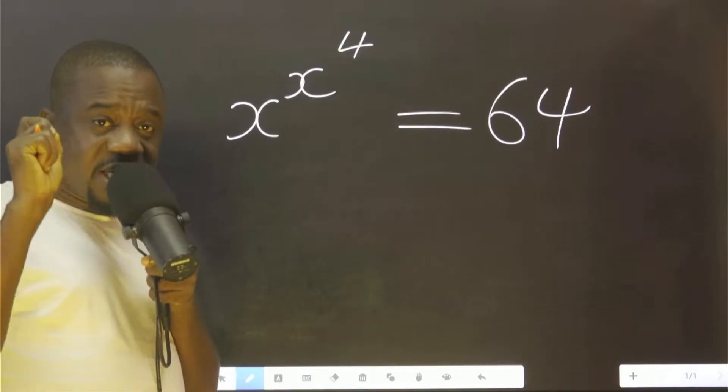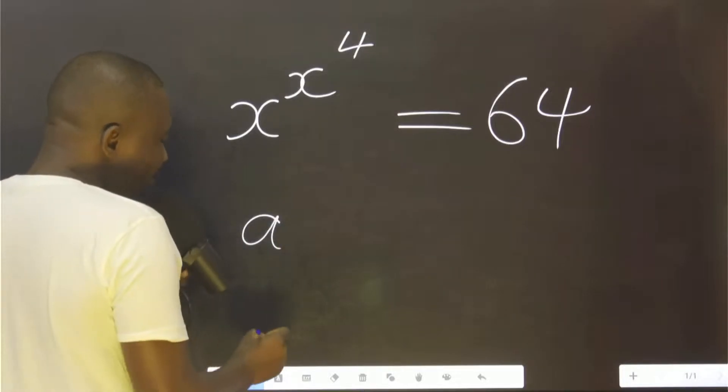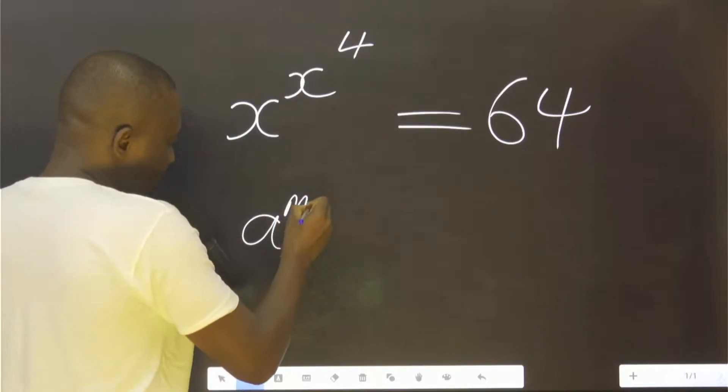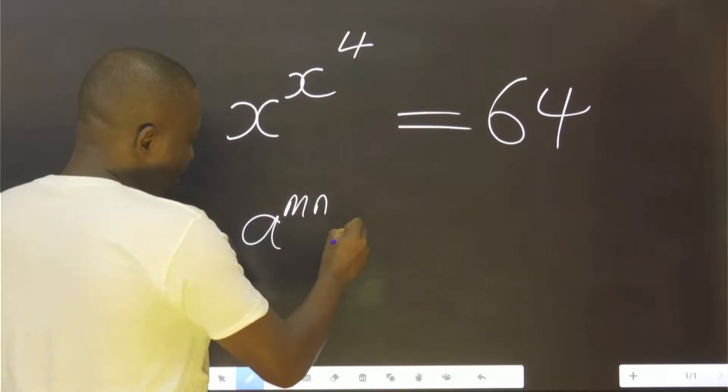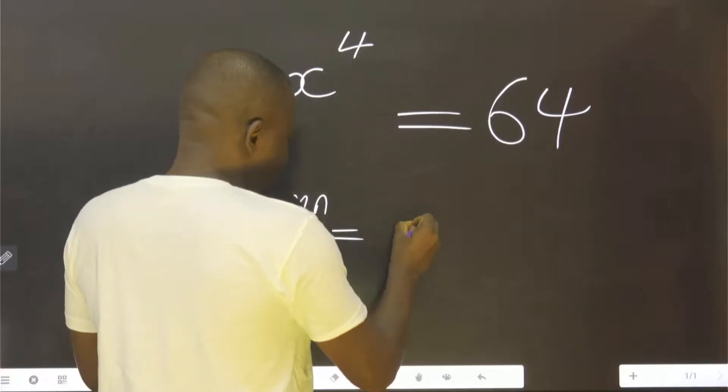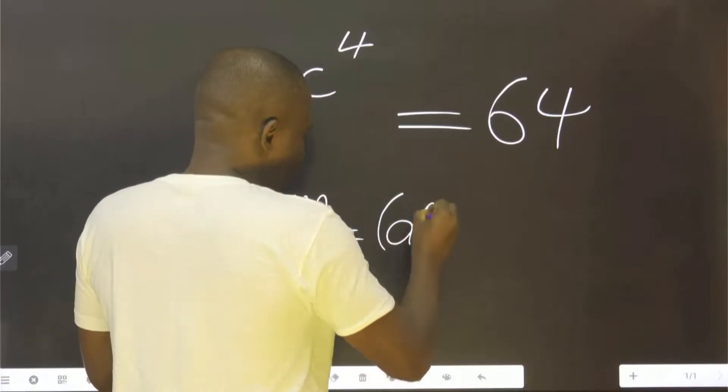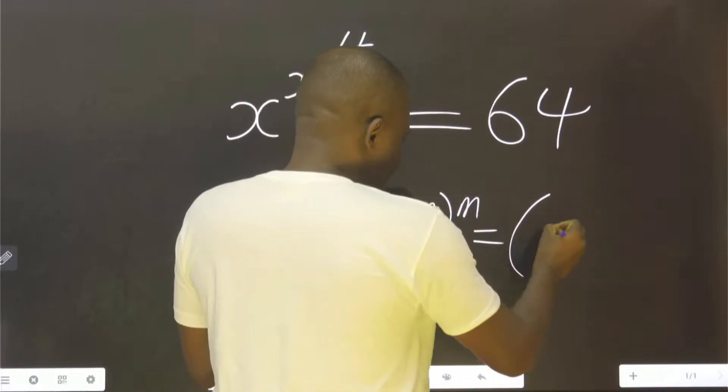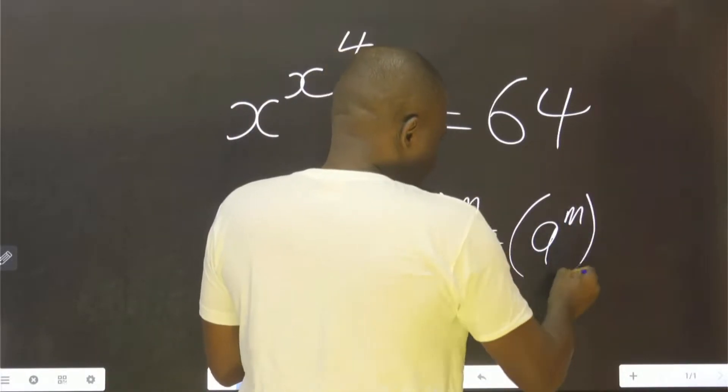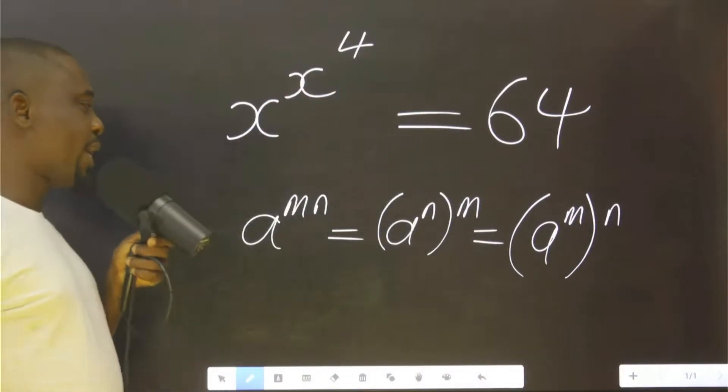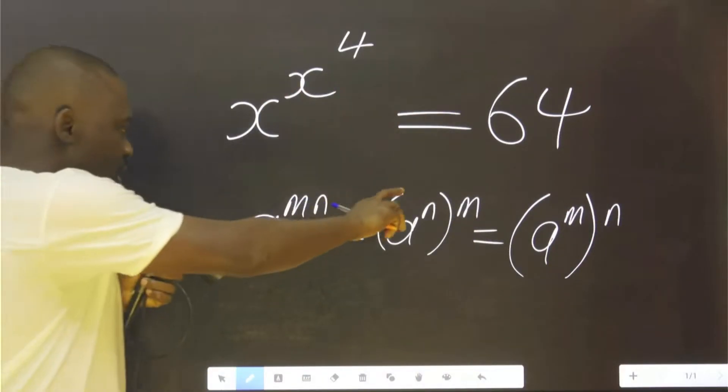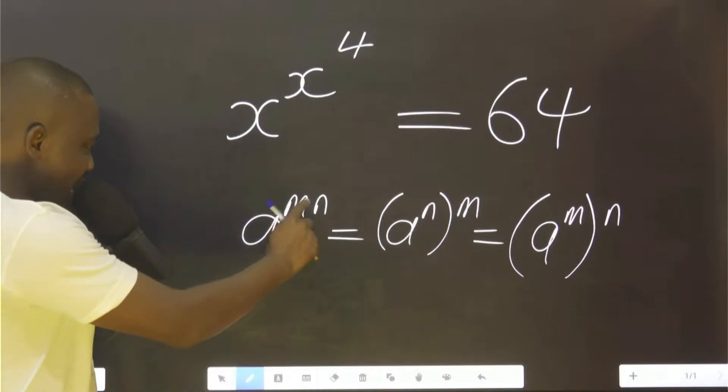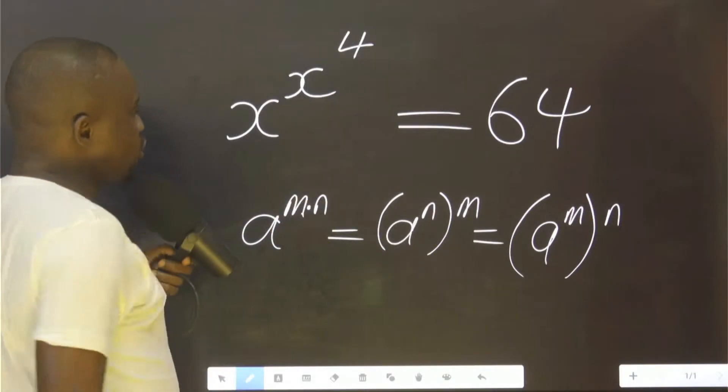We are going to use this index rule that says if you have something like this, it's actually what? Or you can also express it as... you can interchange these positions. This means multiplication; you can put a dot in between.